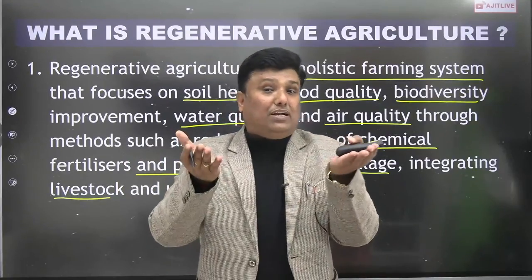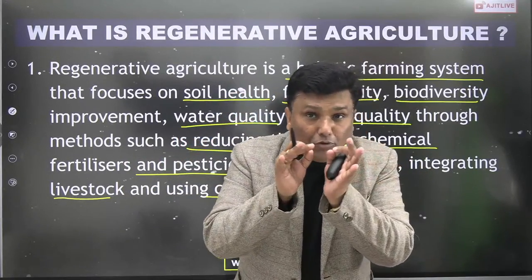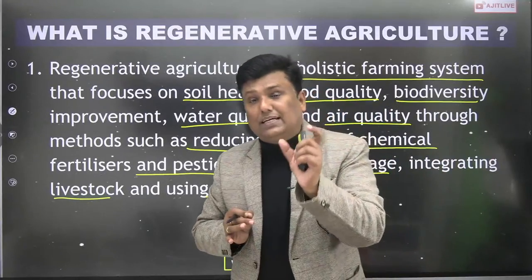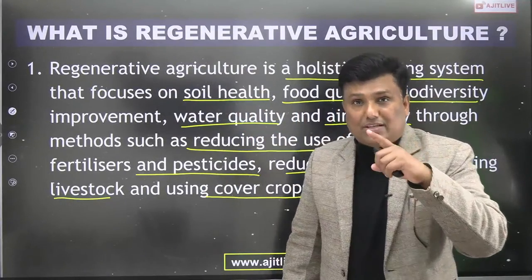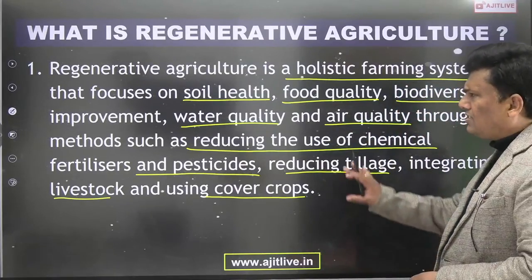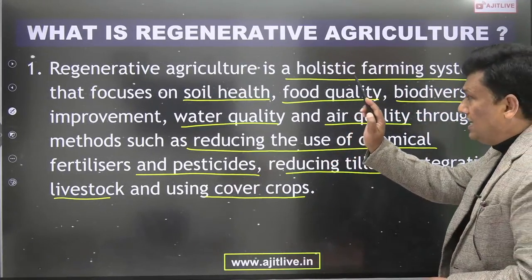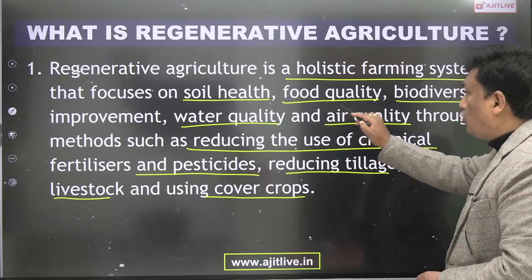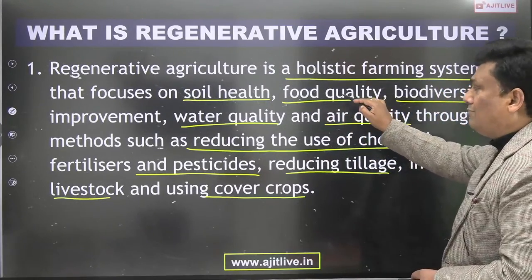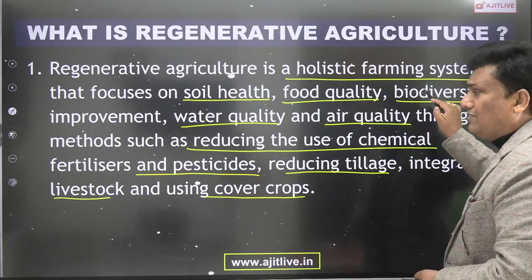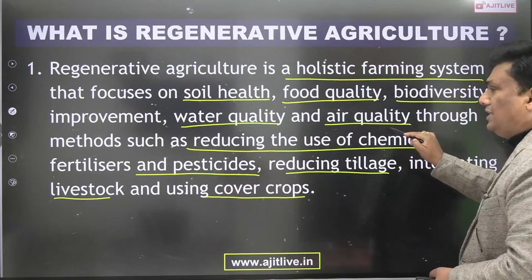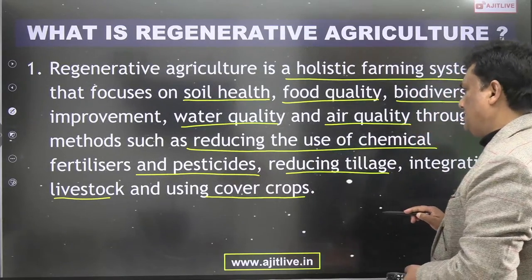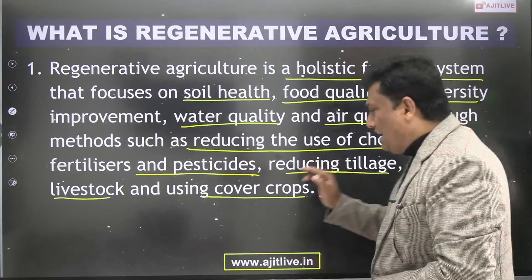Regenerative agriculture is a holistic farming system that focuses on soil health, food quality — to reduce bio-accumulation and chemicals — biodiversity improvement, water quality, and air quality, through methods such as reducing use of chemical fertilizers and pesticides, reducing tillage, integrating livestock, and using cover crops.